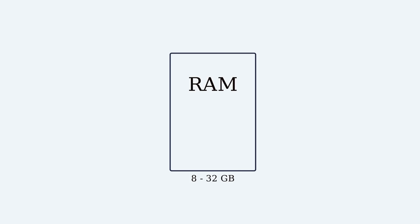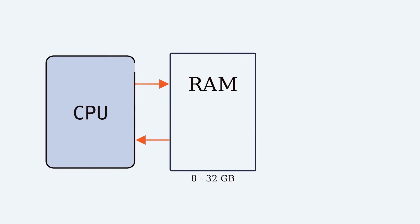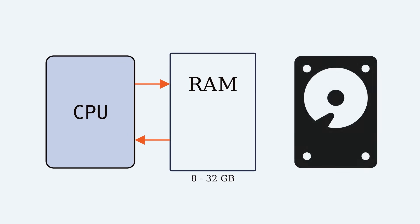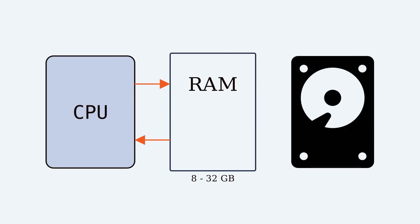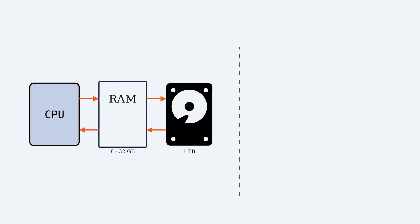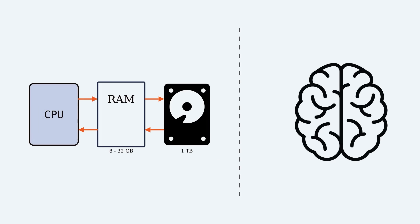The amount of random access memory, RAM, in a typical laptop is probably around 8 to 32 gigabytes. That's the part that directly interacts with the CPU. Aside from that, your hard disk might have another terabyte or so of memory. But how much memory do you — that's to say, the human brain — have? And can we even measure it in bytes?